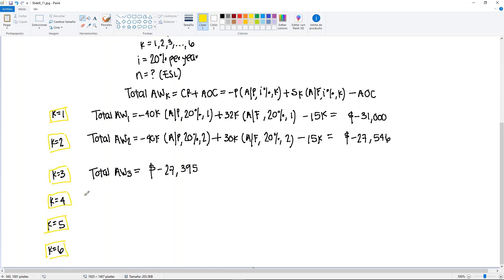So remember number 6, 6 years is the maximum. So you'll get total annual worth in the fourth year, it will be minus 26,726.